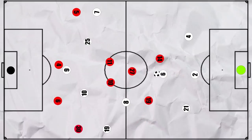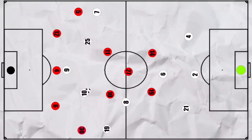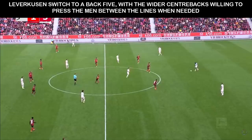Leverkusen looked to adapt in the second half, switching to a 5-3-2 to deal with the overload as they would now have 3 midfielders. Crucially, the extra centre back also had enough freedom to be more aggressive in following a man between the lines who was looking to receive.